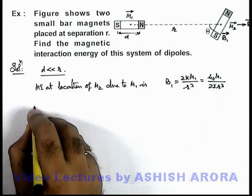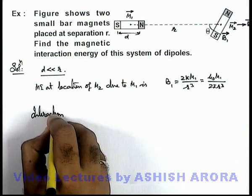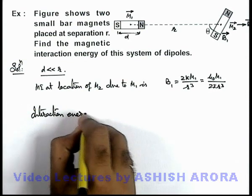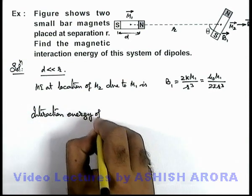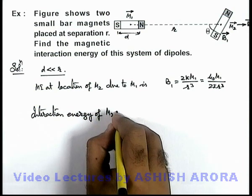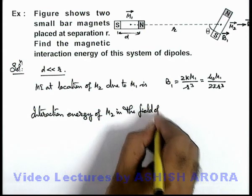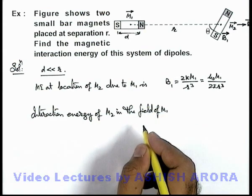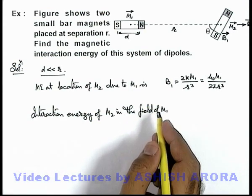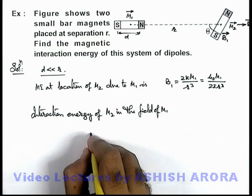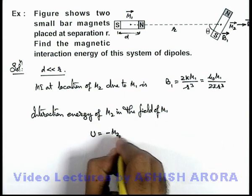Now, if we calculate the interaction energy of m2 in the field of m1, then here you can see the interaction energy can be given as U equals minus m2